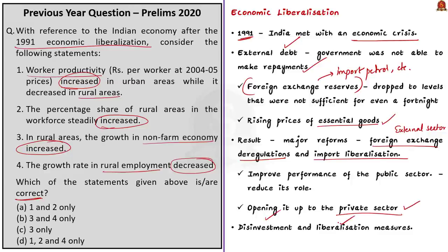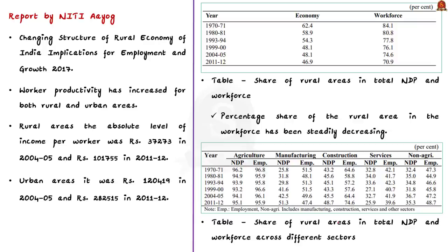As a result, major reforms were undertaken in the industrial and financial sectors by the government. The major external sector reforms include foreign exchange deregulation and import liberalization. With a view to improve the performance of the public sector, there was a consensus on reducing its role and opening it up to private sectors through disinvestments and liberalization.